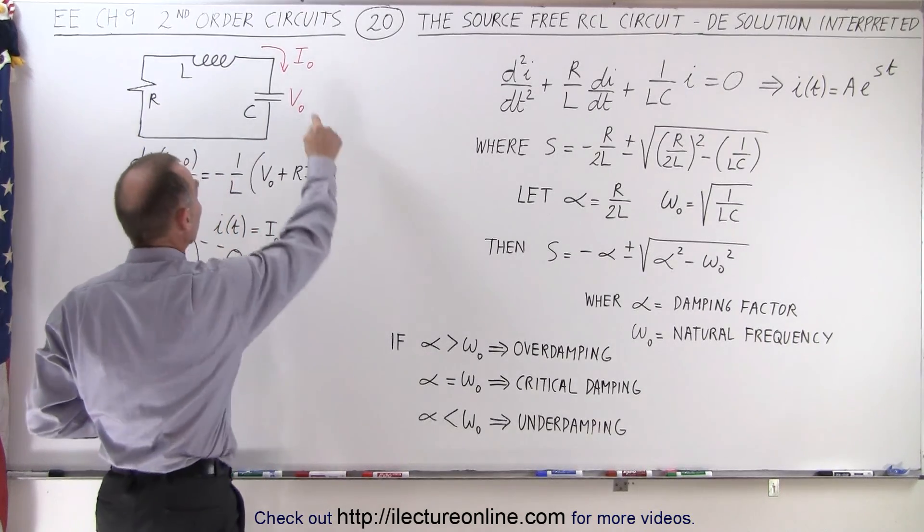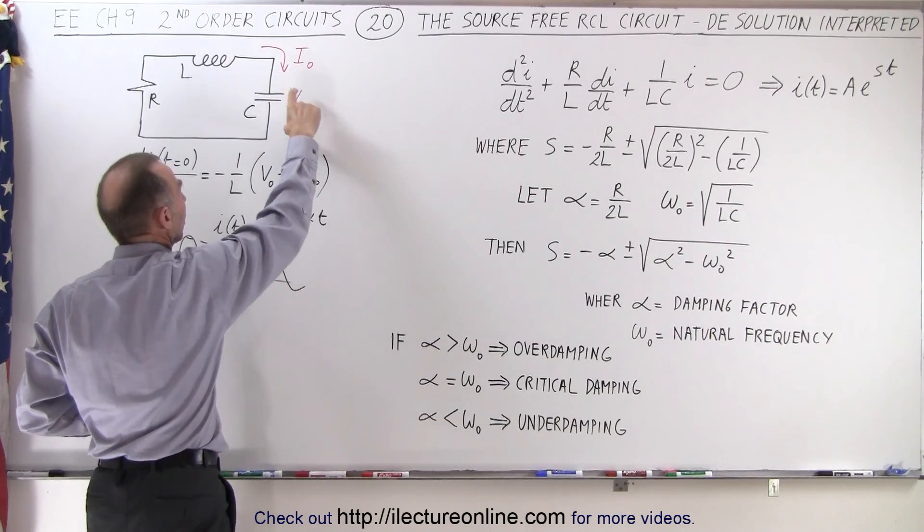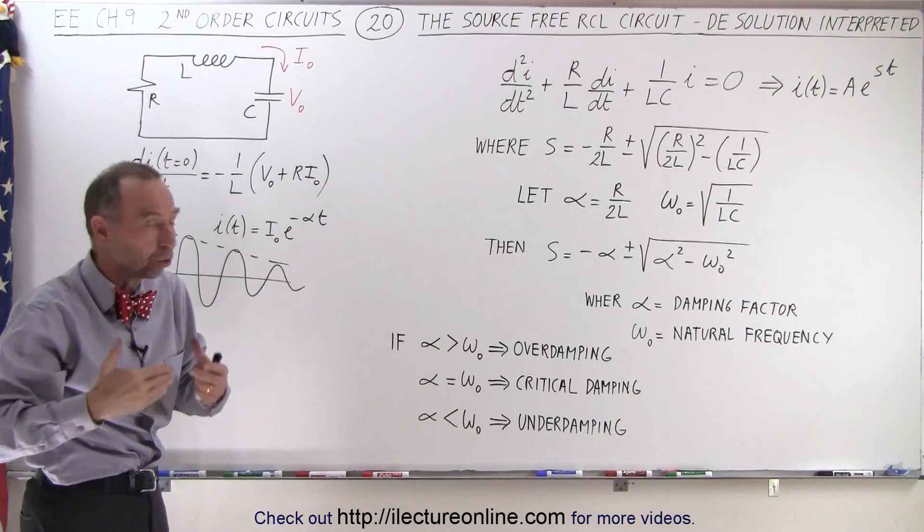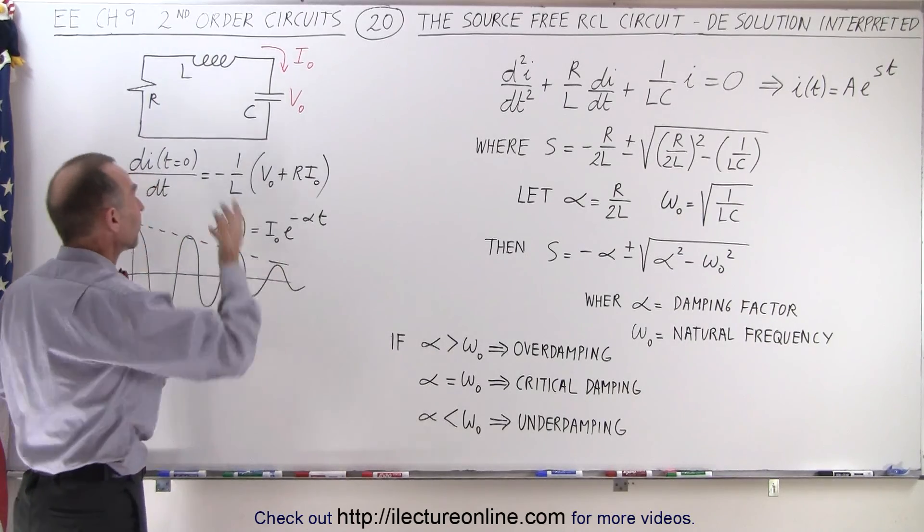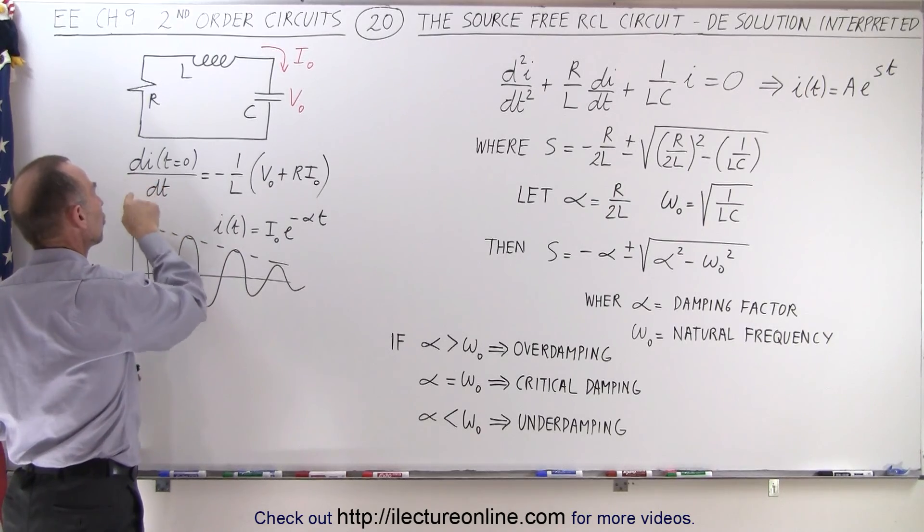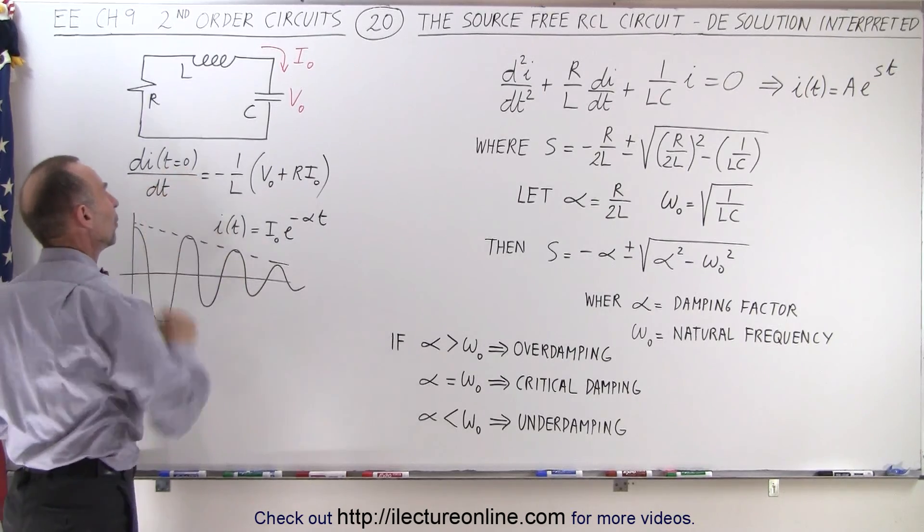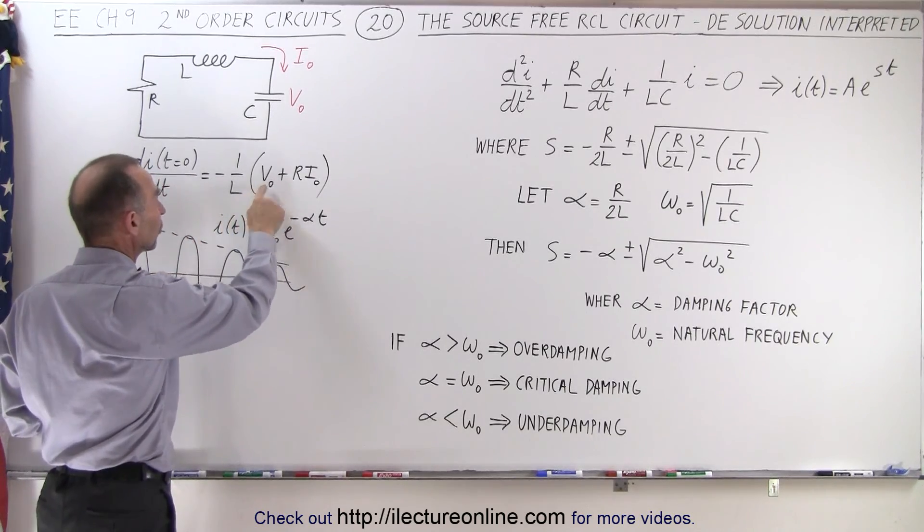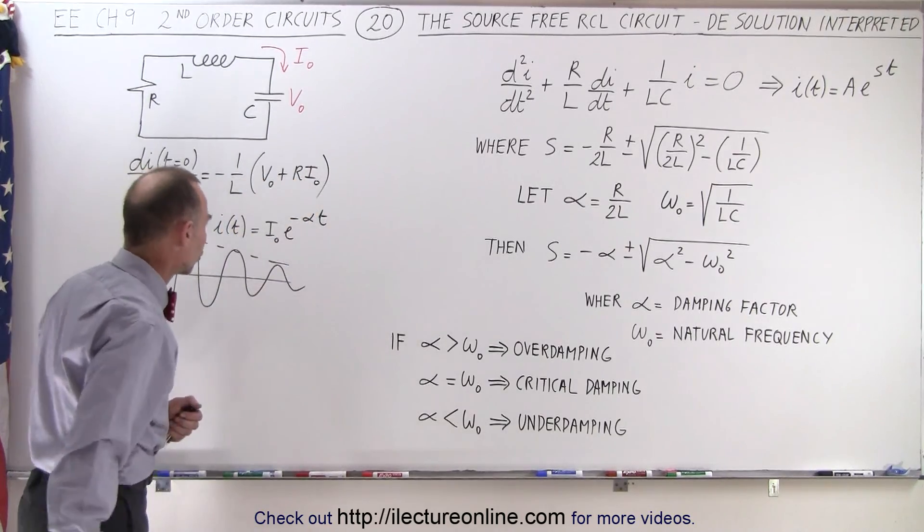We had some initial condition where we had an initial current in the circuit, an initial voltage across the capacitor because we had the initial amount of charge in the capacitor driving the start of the circuit, and we found the initial condition for the change in the current with respect to time when time is equal to zero in terms of the inductance, the initial voltage, the resistance, and the initial current.